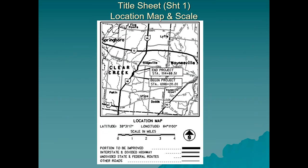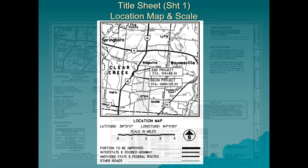In the upper left-hand corner is a location map and a scale — the scale refers only to this location map, nowhere else in the set of plans. The location map gives you a general idea of where the project is relative to other state routes, county routes, and township routes in Warren County. We also give a begin project flag and an end project flag, showing where the project begins and ends by station number.